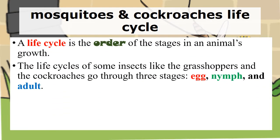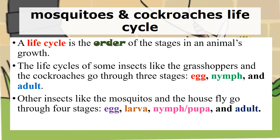Mosquitoes and Cockroaches Life Cycle. Mosquitoes and cockroaches have a life cycle, and the life cycle is the order of stages in an animal's growth. The life cycle of some insects, like the grasshoppers and the cockroaches, go through three stages: the egg, the nymph, and the adult.